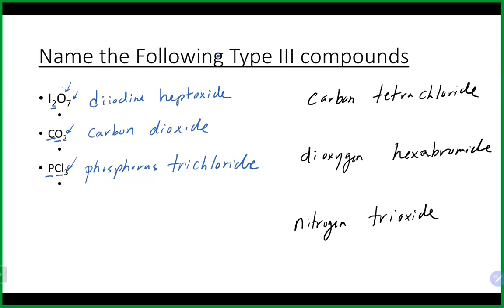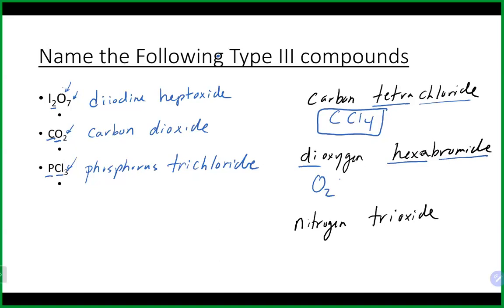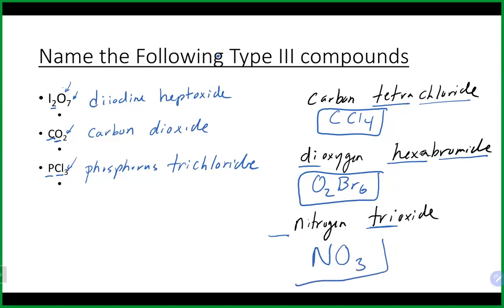Now writing formulas from names: 'carbon tetrachloride' — prefixes tell me it's Type 3. 'Carbon' with no prefix means one; 'tetra' means four; 'chloride' is Cl — so CCl₄. For 'dioxygen hexabromide': 'di' means two O's, 'hexa' means six, bromide is Br — so O₂Br₆. For 'nitrogen trioxide': no prefix on nitrogen means one; 'tri' means three; oxygen is O — so NO₃.